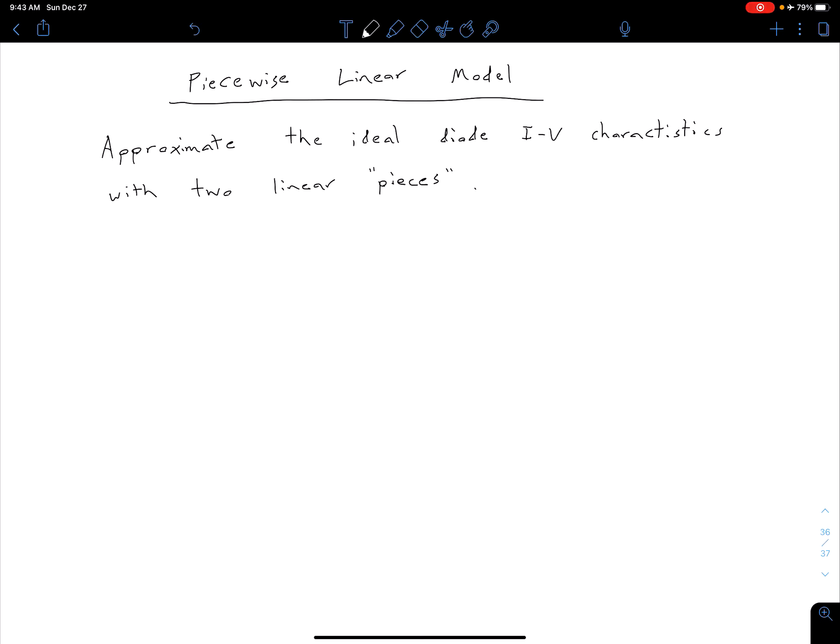So with this model, what we're doing is we're approximating our diode IV equation. We're taking that current voltage characteristic, and we're going to replace it with two linear pieces.